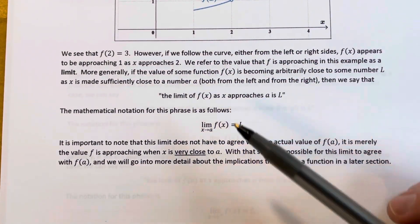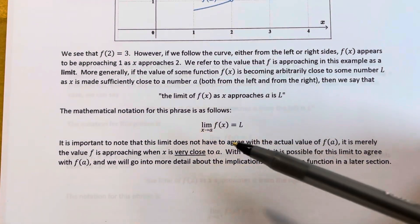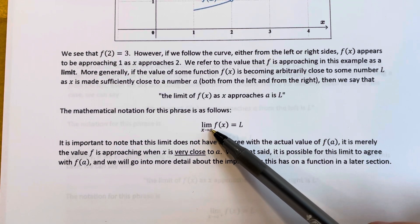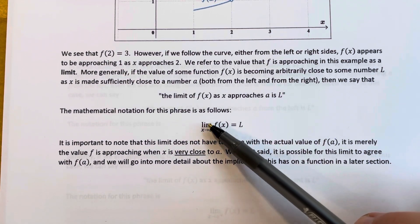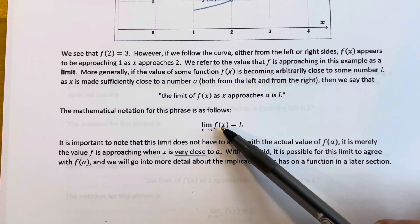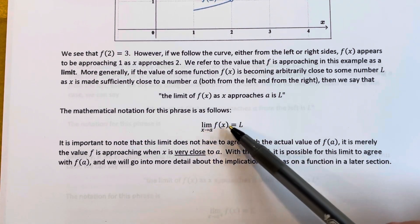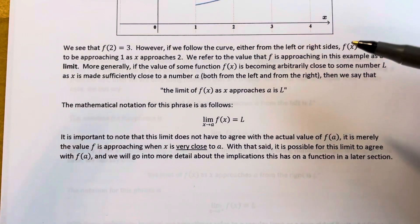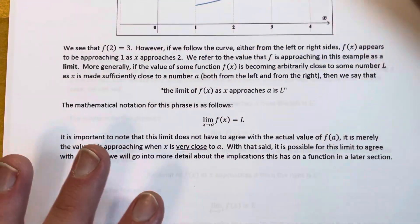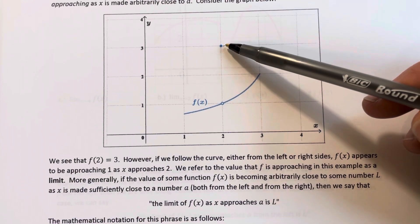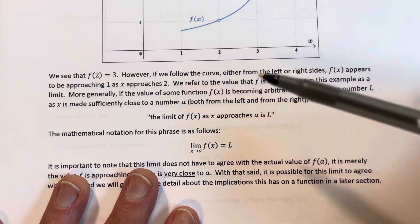Here's the actual notation. LIM — which stands for limit — with x and an arrow pointing towards a. We read this as: the limit as x approaches a of f of x equals L. The f of x is to the right of this notation. The idea is that the limit does not actually have to be the same number that the function is equal to at that point — it's just what it's approaching.